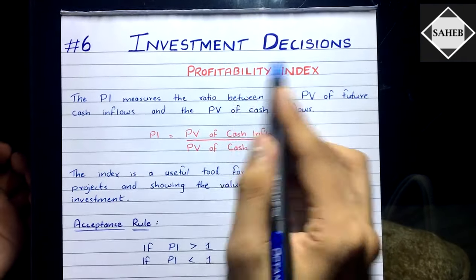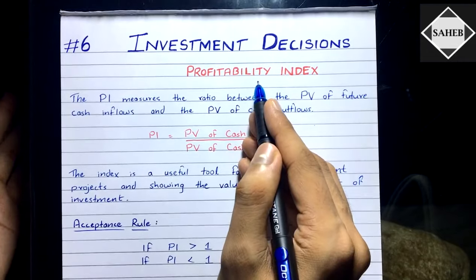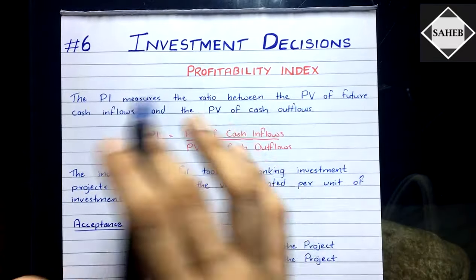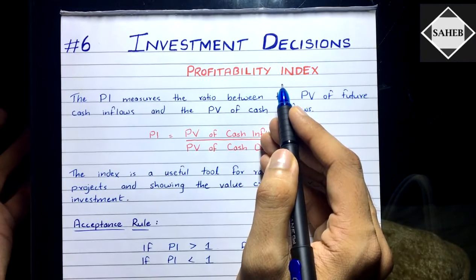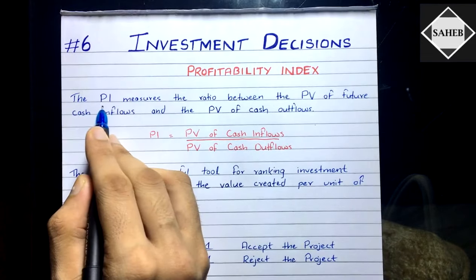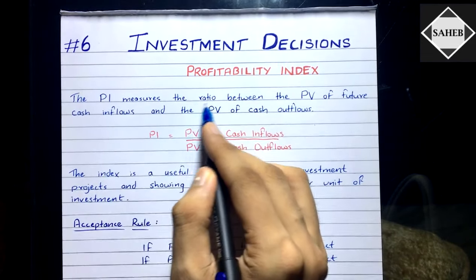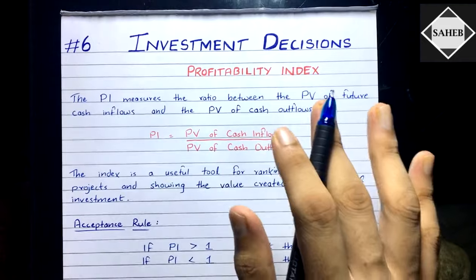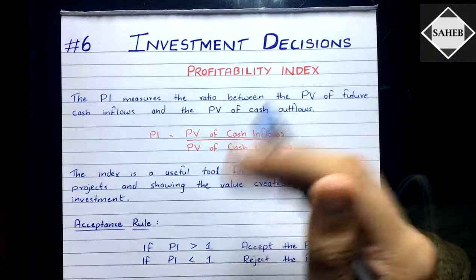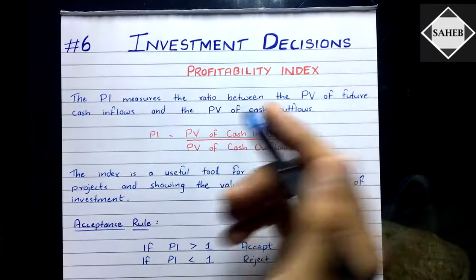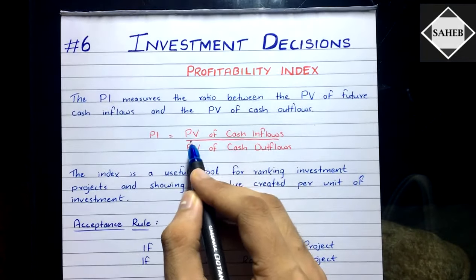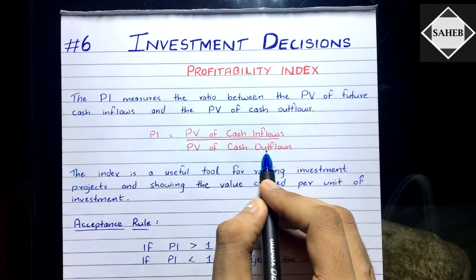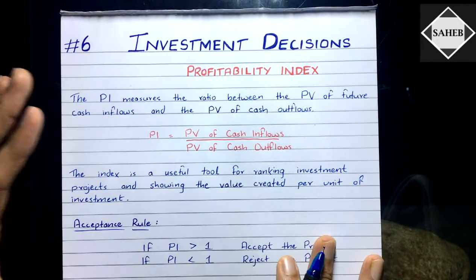Now let's understand what is meant by the Profitability Index. You already know this is a technique of capital budgeting used to evaluate projects. The PI measures a ratio — it is simply the ratio between the present value of future cash inflows you are going to receive over the years of the project, and the present value of cash outflows. The formula is: PI = Present Value of Cash Inflows divided by Present Value of Cash Outflows.